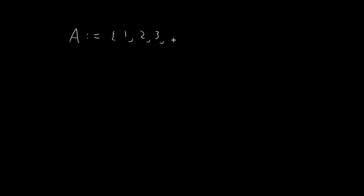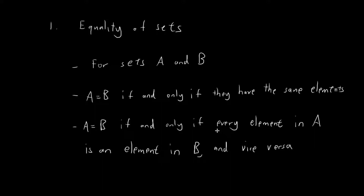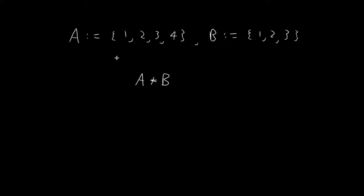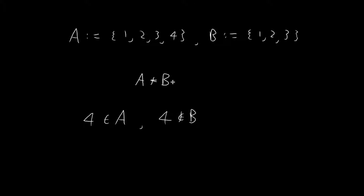Moving on to the next example, let's say A is defined to be the set consisting of the four numbers 1, 2, 3, 4. And B is defined to be the set consisting of the numbers 1, 2, 2, and 3. The question is whether A is equal to B or not. The conclusion is A is not equal to B. Going back to the definition, if A is equal to B, then for every element in A, it must also be an element in B. You can see that 4 is an element of A, but 4 is not an element of B. So the condition for equality is not satisfied, and we conclude that A is not equal to B.